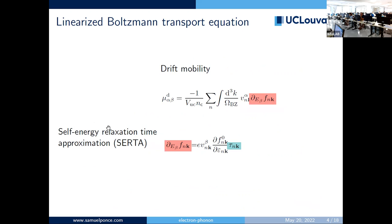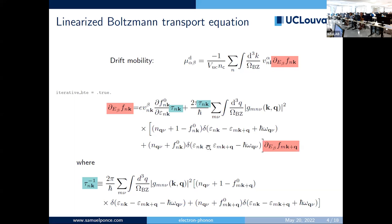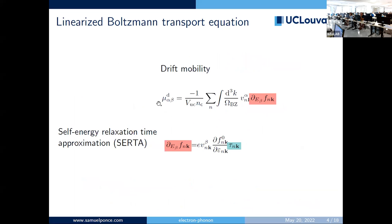You can make an approximation called the self-energy relaxation time approximation, in which you choose to neglect this second term. Then the mobility is much simpler: you just have the first term, which you plug in to get a simple expression for the drift mobility. You end up with velocity times velocity and the change of occupation function — in this case it's f₀, the Fermi-Dirac distribution function, as a function of energy.